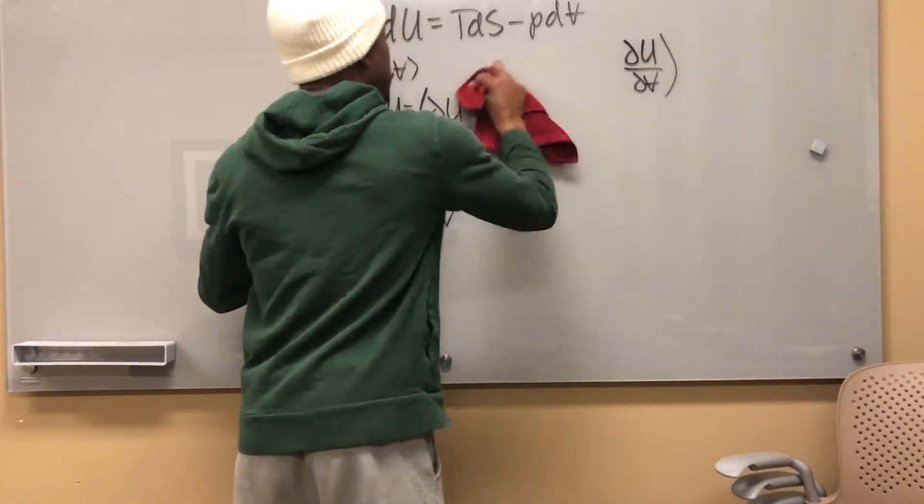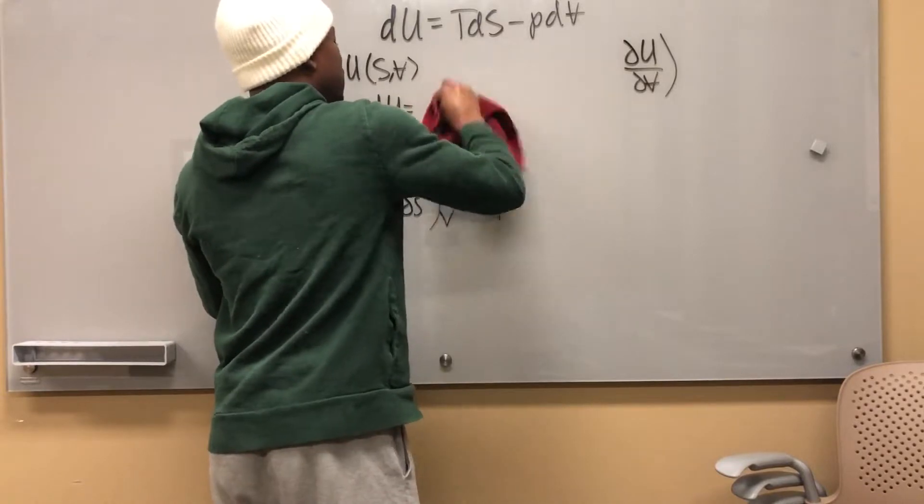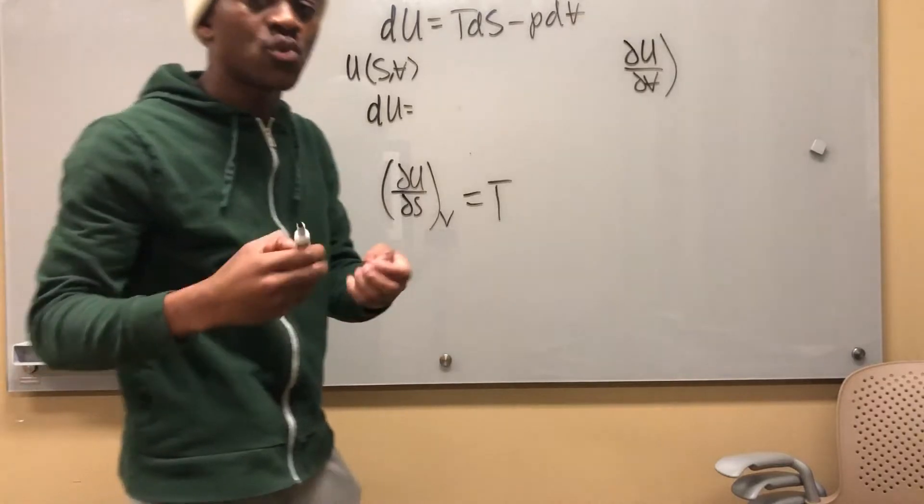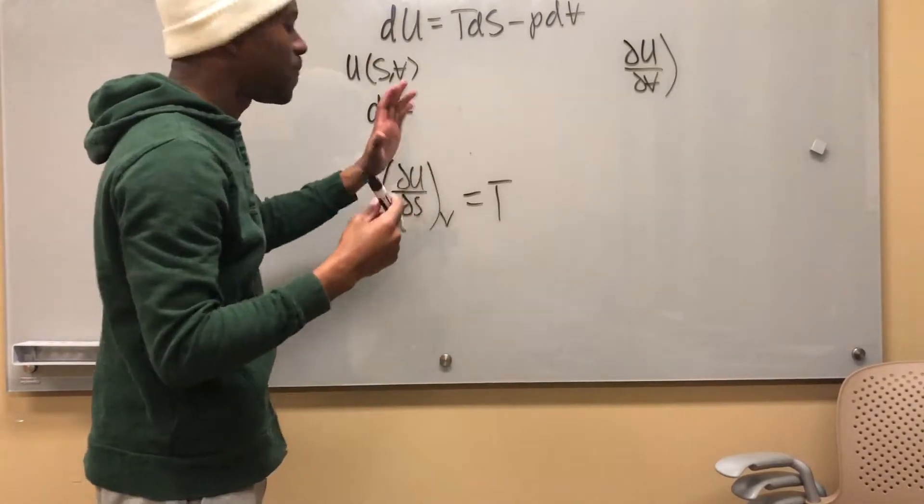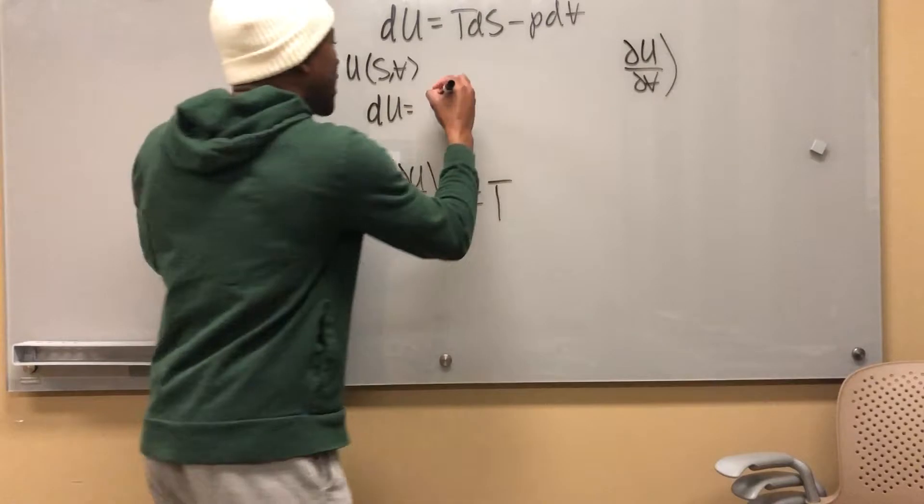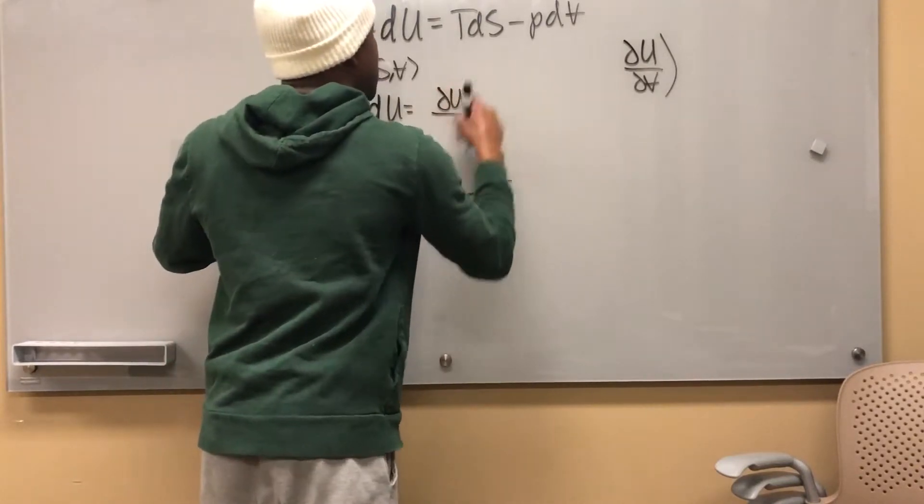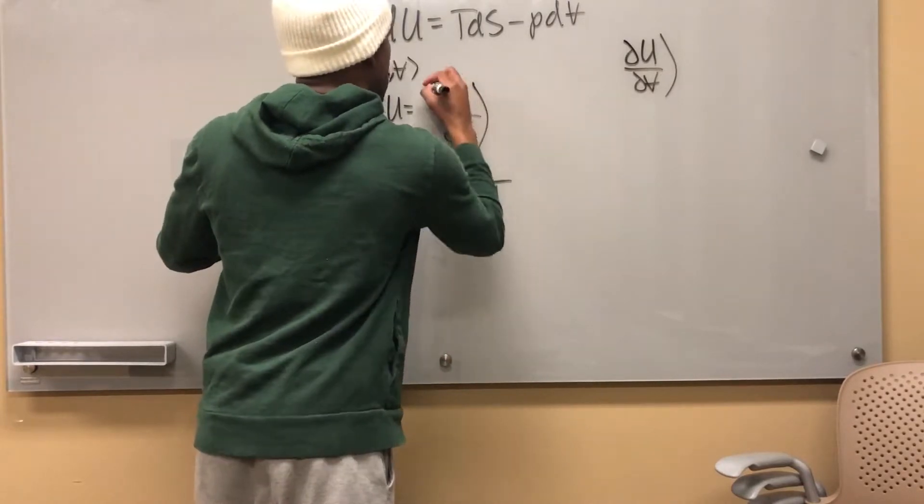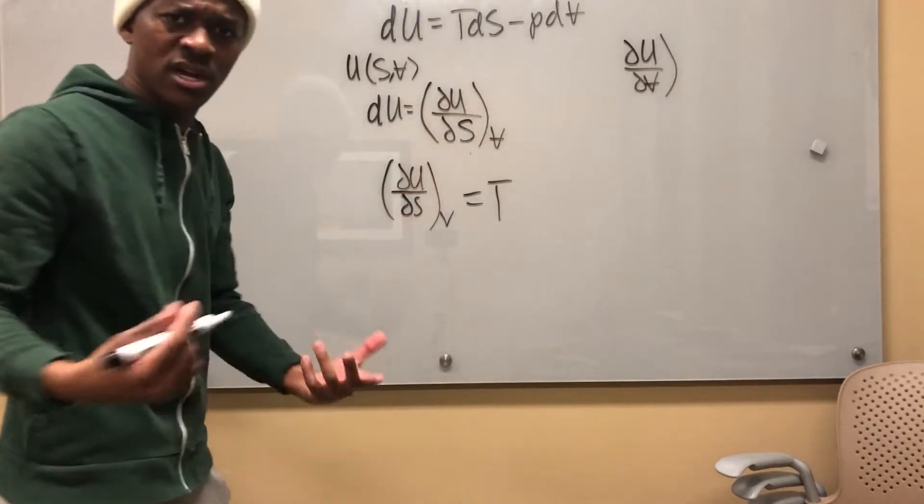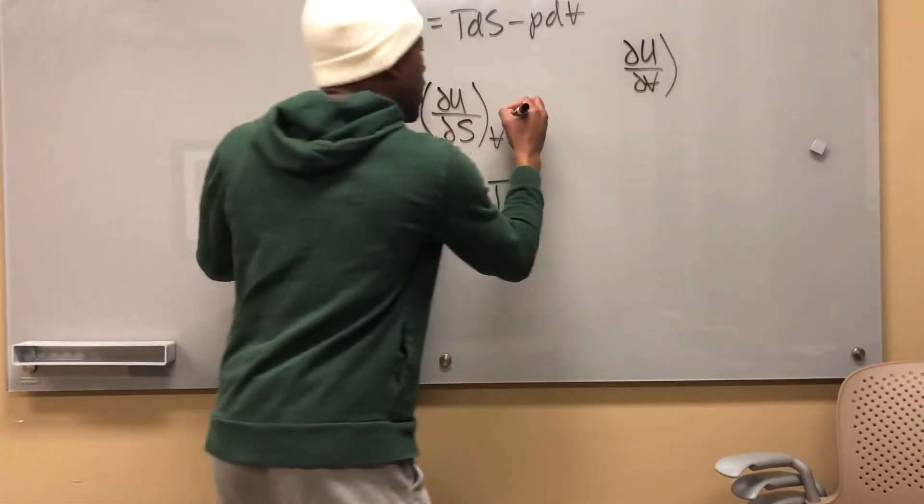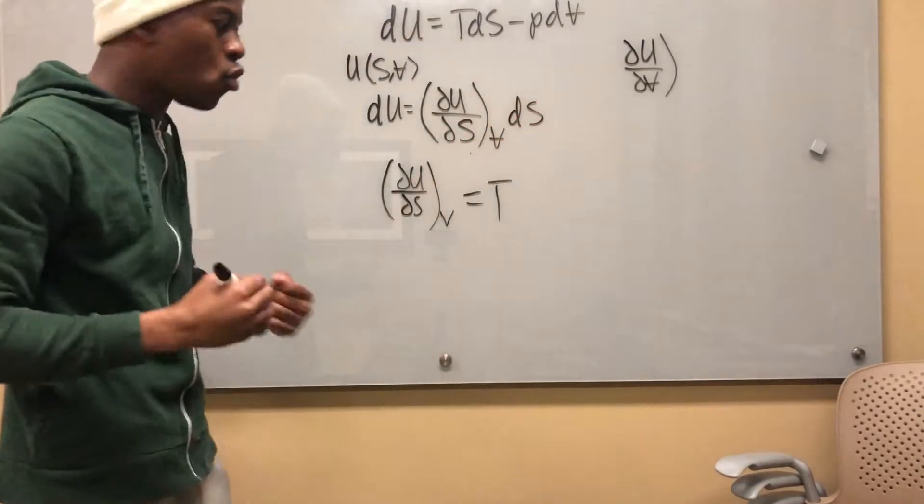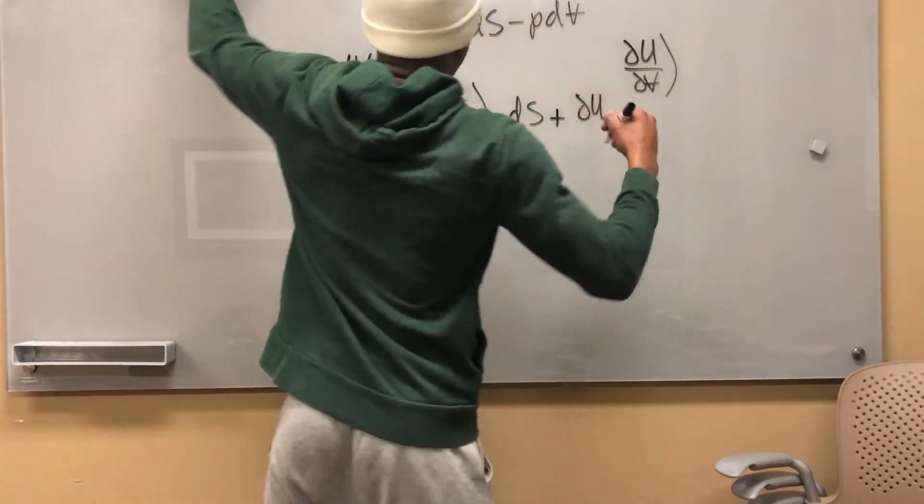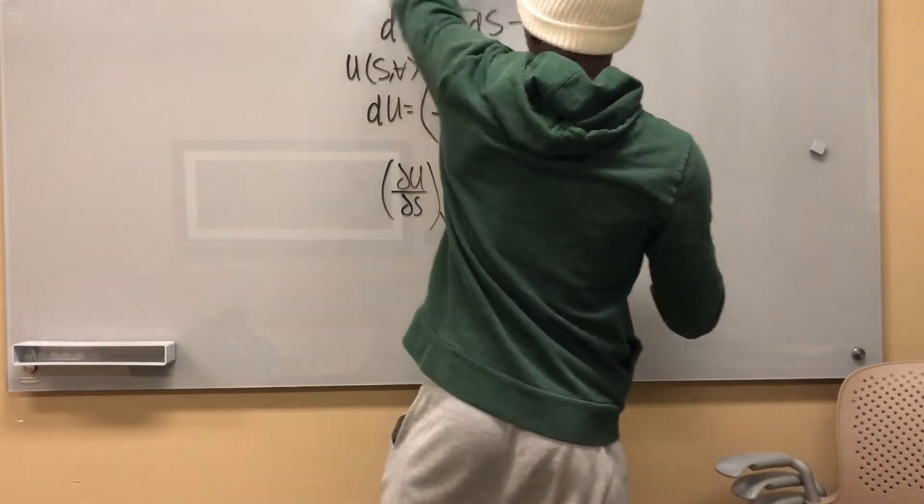Let me go ahead and just rewrite the whole thing. See how I caught myself? This is why intuition is better than memorizing. When you have a derivative, I have to have a derivative term at the end, so partial u with respect to partial s at constant v times ds.